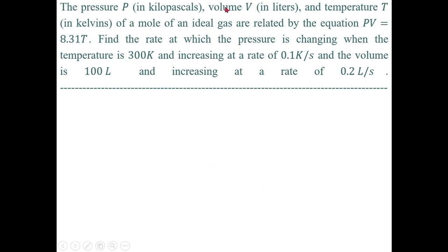Problem: The pressure P in kPa, volume V in liters, and temperature T in Kelvin of one mole of an ideal gas are related by PV = 8.31T. Find the rate at which the pressure is changing when the temperature is 300 K and increasing at 0.1 K/s, and the volume is 100 liters and increasing at 0.2 liters per second.